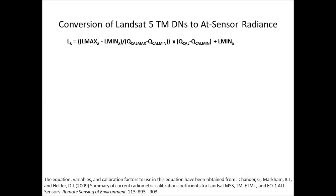I'd like to have a look at the equation for converting Landsat 5 Thematic Mapper digital numbers to at-sensor radiance, or performing radiometric correction. At the top of the slide here I've got the basic equation for performing this correction.